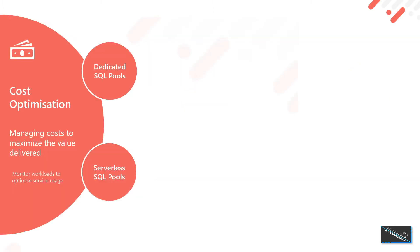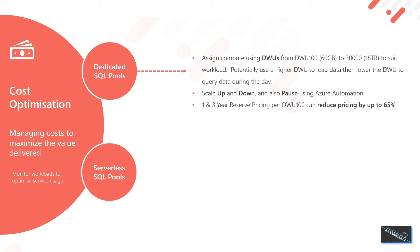The first pillar we'll look at is cost optimization — we're looking to maximize value and minimize costs. With dedicated SQL pools, we've got a concept of the DWU, the Data Warehouse Unit. We can scale up and down our dedicated SQL pools to match our workload; it is a manual operation. We can also pause to optimize what we're using, and we can use reserve pricing for one and three years, which can reduce the cost of those DWUs by up to 65%.